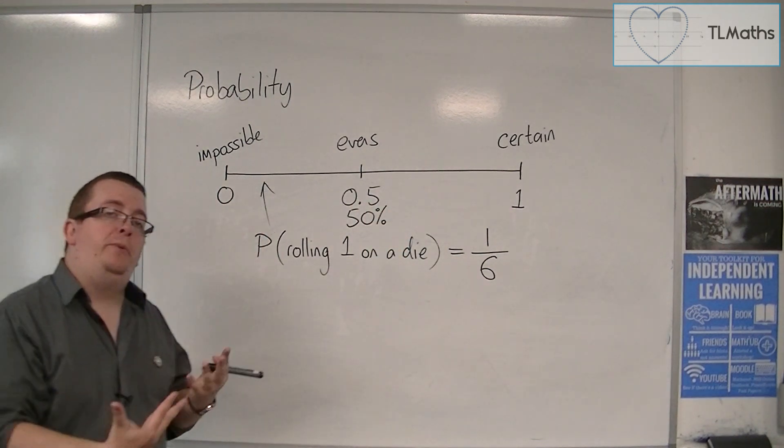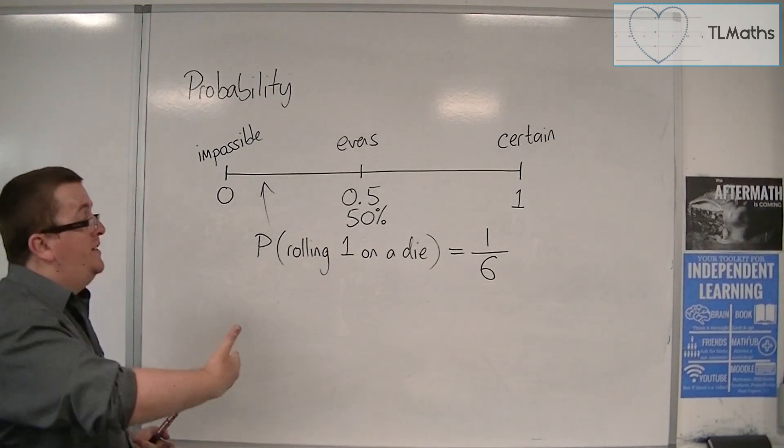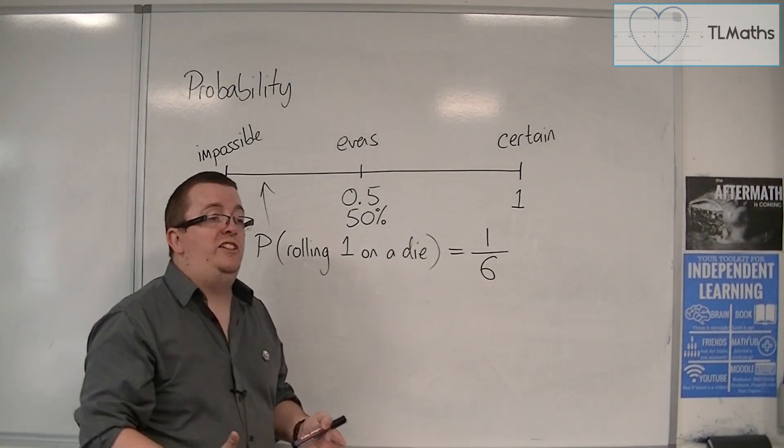This has a 32% chance of happening, for example. Or, the probability of this happening is 0.32. Or, the probability of this happening is 32 out of 100.